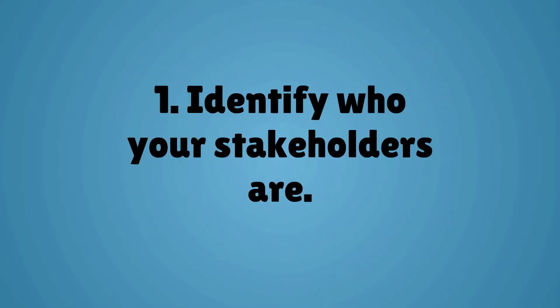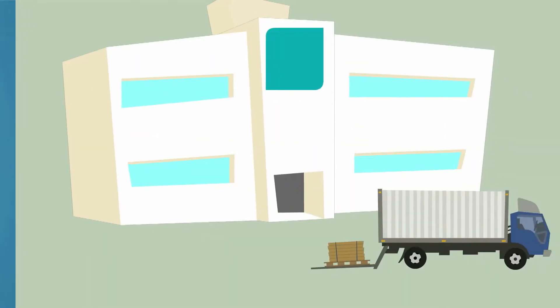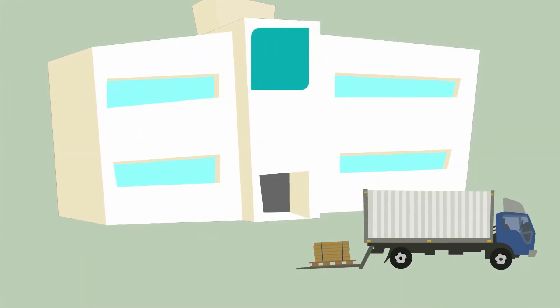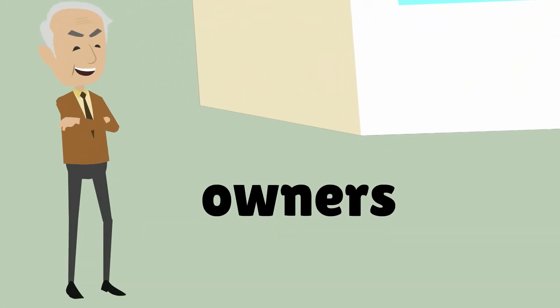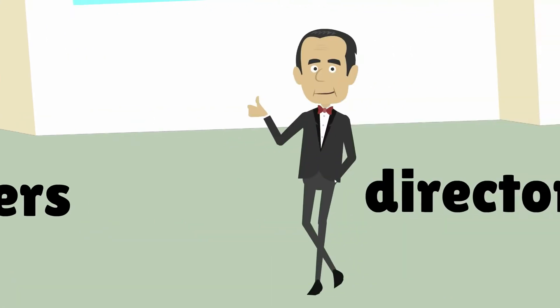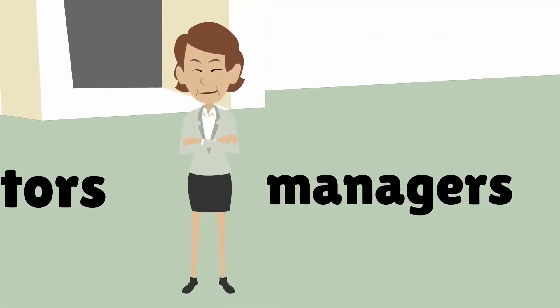There are three steps to an effective stakeholder analysis. The first is that you need to identify who your stakeholders are. If we look at the stakeholders from the organizational viewpoint, these include owners, directors, managers, and employees.